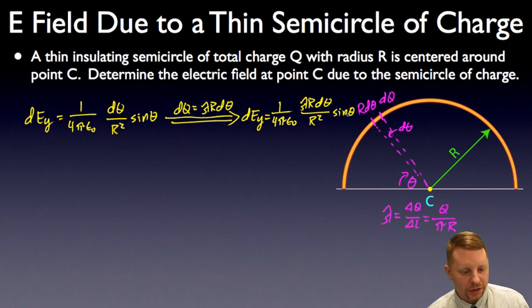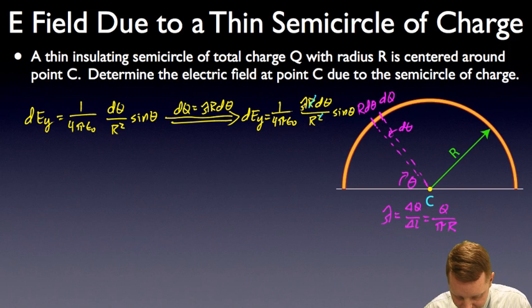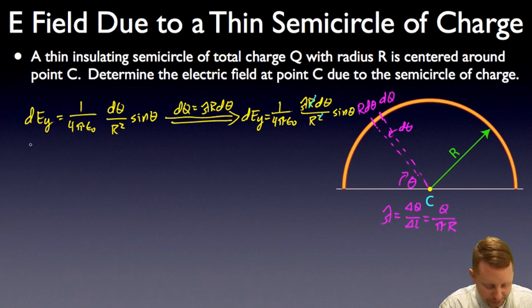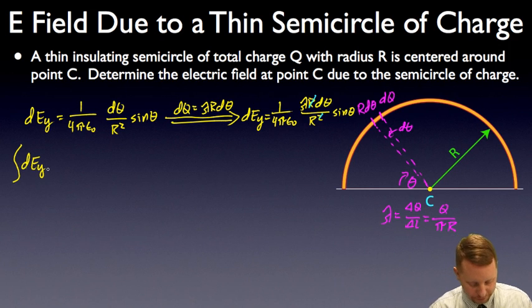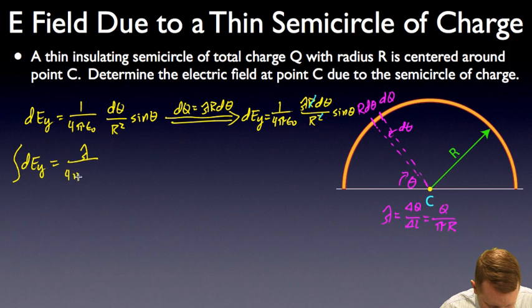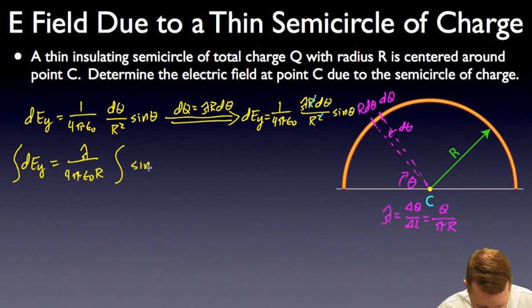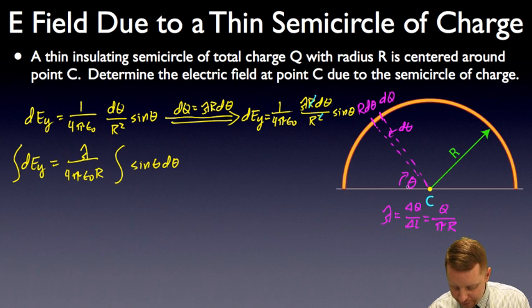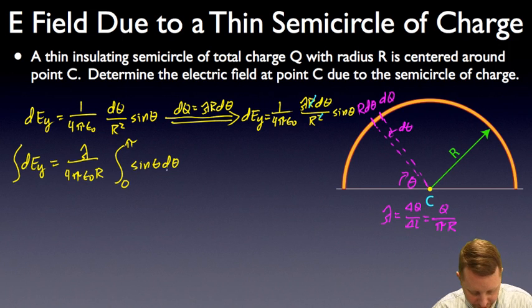Right away there are a couple of simplifications we can make. I see an R versus an R squared there. Lambda is a constant, and R is also a constant. So if I integrate both sides, on the left-hand side I'll have the integral of the differential of the y component of the electric field. That must equal — pulling out our constants — lambda over 4πε₀R, times the integral of sine theta dθ. Our limits of integration are from theta equals 0 to theta equals π.